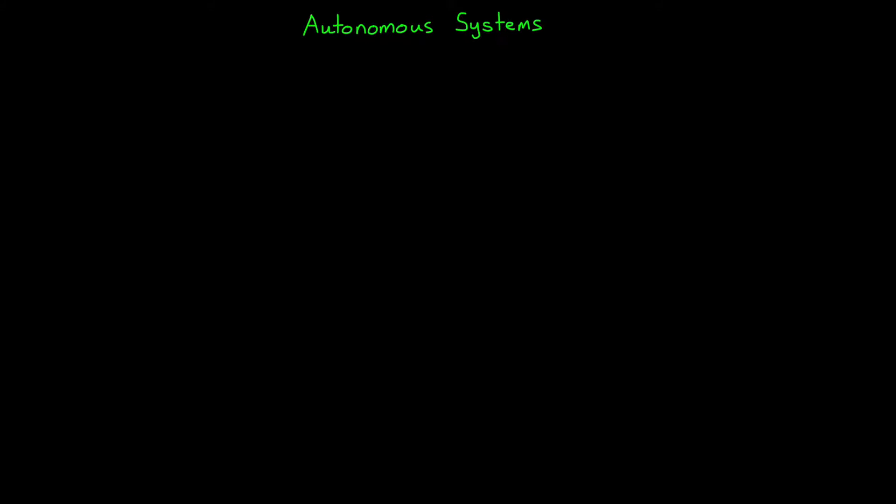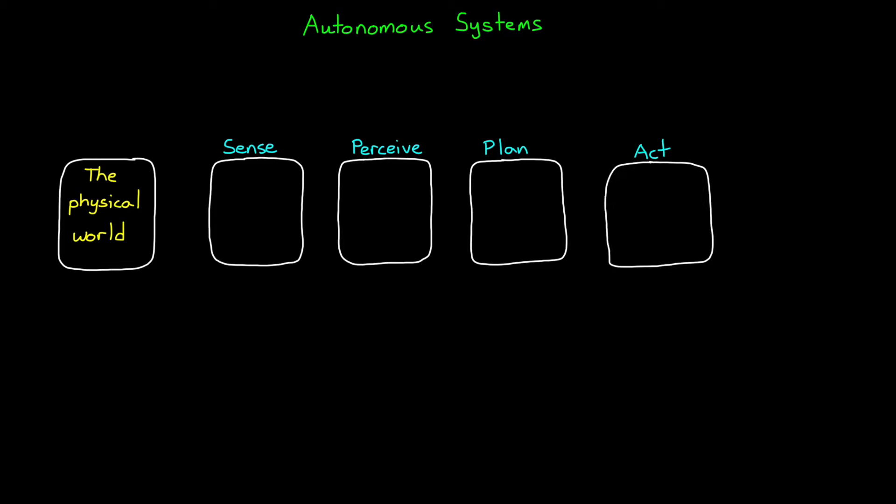To understand why, let's start with the big picture. Autonomous systems need to interact with the world around them. And in order to be successful, there are certain capabilities that the system needs to have. We can divide these into four main areas: Sense, Perceive, Plan, and Act.